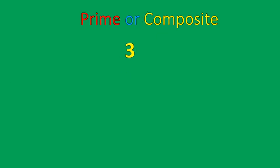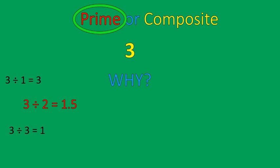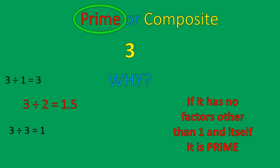Let's look at another one: three. Is this prime or composite? This one is prime. Why? Because three can only be divided by itself and one. If you try doing three divided by two, it gives you one and a half. So the only numbers you can divide three evenly by are one and three. If it has no other factors than one and itself, we know that the number is prime.